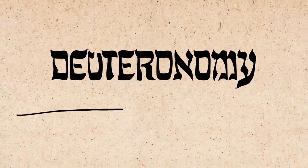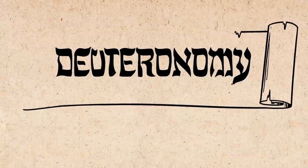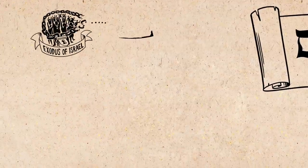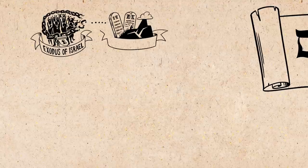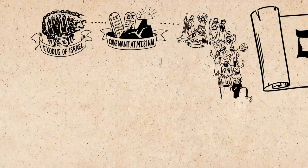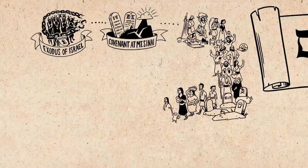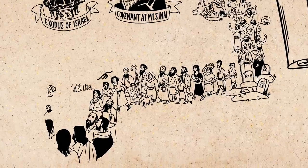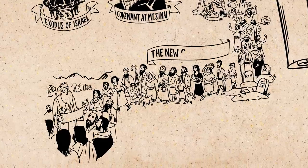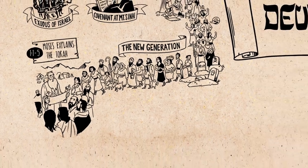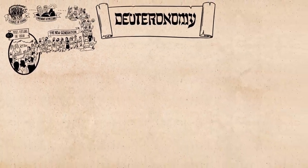The book of Deuteronomy is the fifth book of the Bible and the final book of the Torah. After the exodus from Egypt, Israel was at Mount Sinai for one year entering into a covenant with their God. Then they had the disastrous road trip through the wilderness and the exodus generation disqualified themselves from entering into the land promised to Abraham. So Deuteronomy begins with Moses standing in front of this new generation explaining the Torah, and it is from here that the design and purpose of the book unfolds.